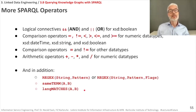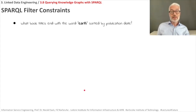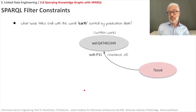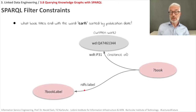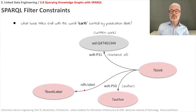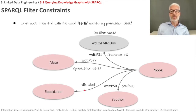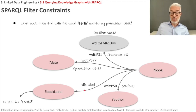Now let's apply filter constraints. We want to find book titles that end with the word 'earth', sorted by publication date. We look for a variable book that is an instance of written work using property P31, retrieve the book label and author, filter for the English label, and get the publication date. The book label is filtered with a regular expression — it should match 'earth' at the end, indicated by the dollar sign in the regex pattern.